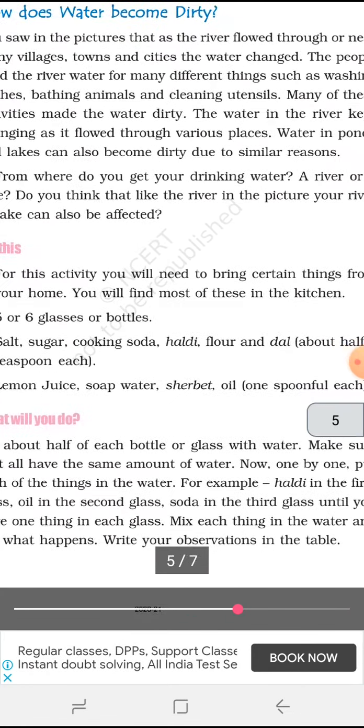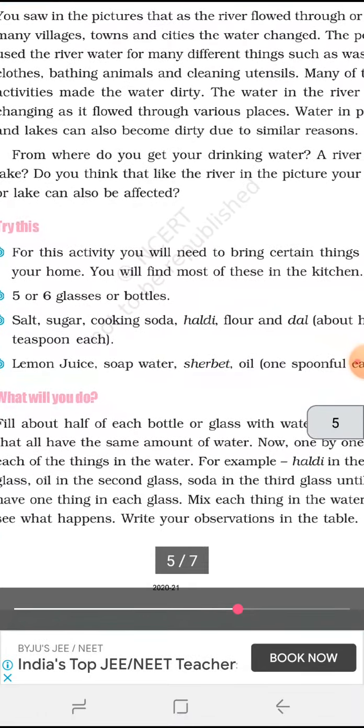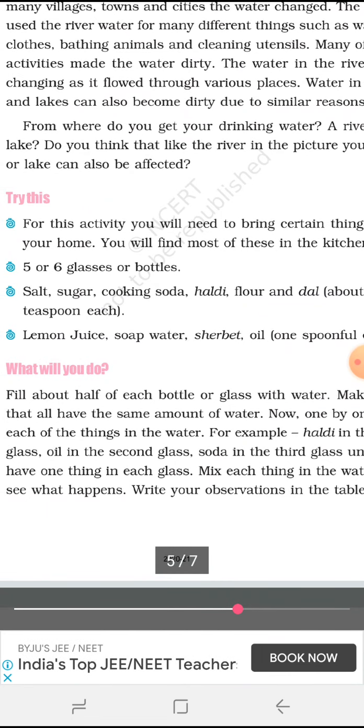From where do you get your drinking water? Where do you drink water from? A river or a lake? Do you think that like the river in the picture, your river or lake can also be affected? Yes, of course in our city also. For example, Gomti is very much affected. It is all full of water pollution. Many people we can see around, they were washing the clothes. Even the many of the buffaloes were also inside the water having a bath and few more activities are going on. Many garbage is there around the river and the surroundings are not at all clean. Even the industrial water drainage is also going inside that river.